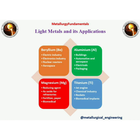Light metals are beryllium, magnesium, aluminium and titanium. These metals have low specific gravity, below 4.5. They are active metals and difficult to prepare. Beryllium has applications in the electric and electronics industry, nuclear reactors and aerospace. Aluminium is used in buildings, automotive, aerospace, electricals and packaging sectors.